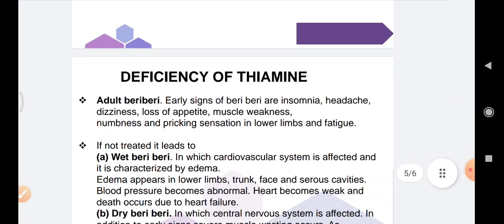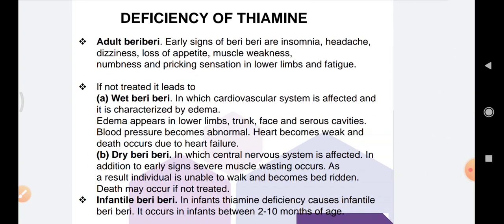Now coming to the deficiency of thiamine. Deficiency of thiamine in adults causes beriberi. The early signs of beriberi are insomnia, headache, dizziness, loss of appetite, muscle weakness, numbness and pricking sensation in the lower limbs, and fatigue.